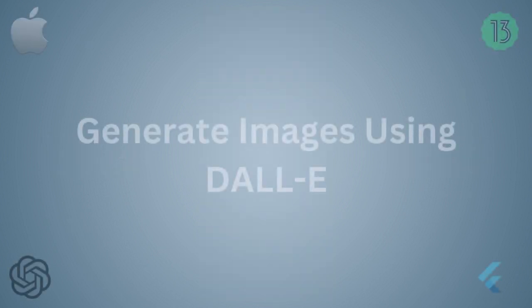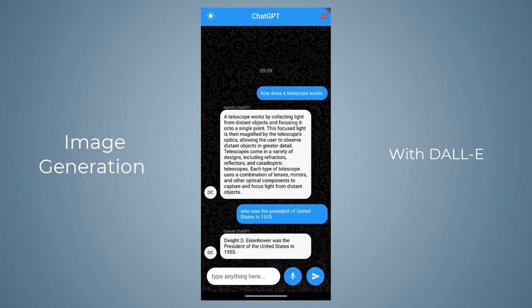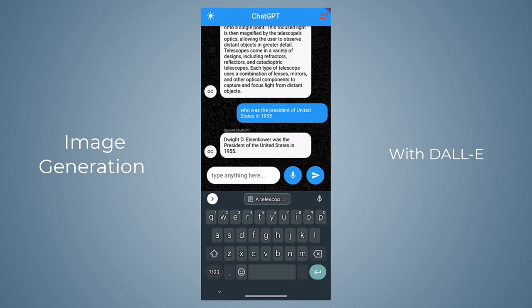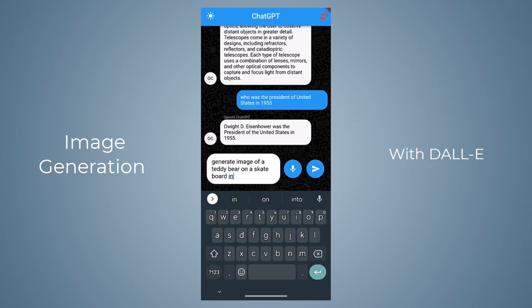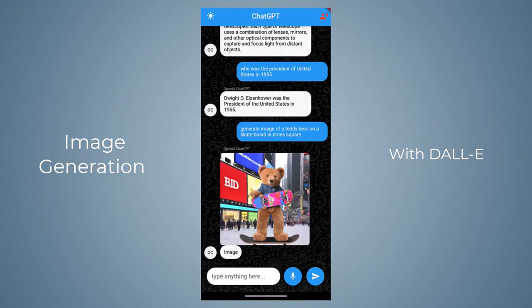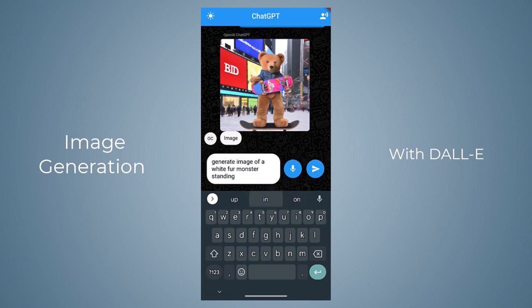After simple question and answers, let's generate images inside our application using the DALL-E model. With the help of this model we can generate images by providing a description in natural language. Let's generate an image by saying 'Generate image of a teddy bear on a skateboard in Times Square,' and there you can see we got this beautiful picture.